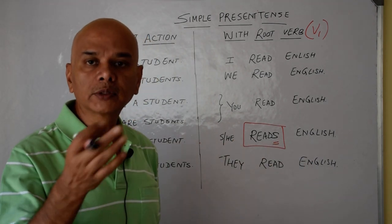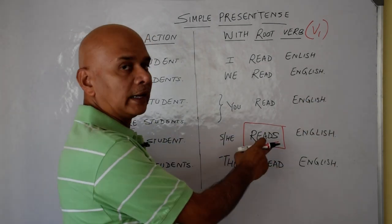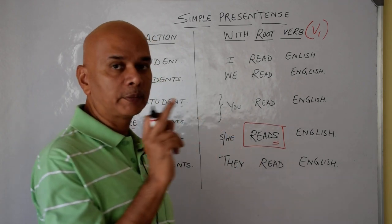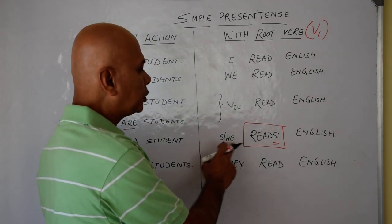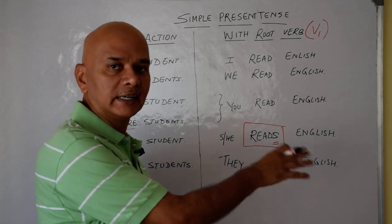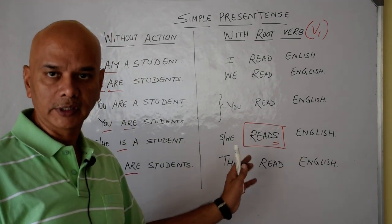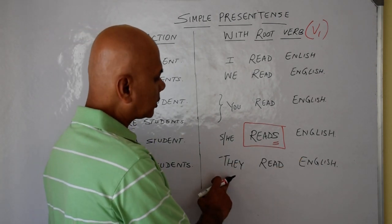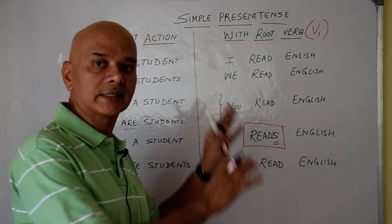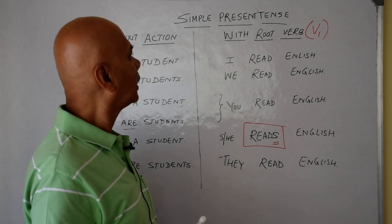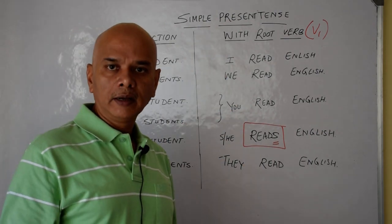For example, 'go' becomes 'goes' — G-O-E-S. He goes to the market. So 's' or 'es' is added to the verb for third person singular simple present tense: she reads English, he reads English, Ram reads English. Third person plural: they read English.